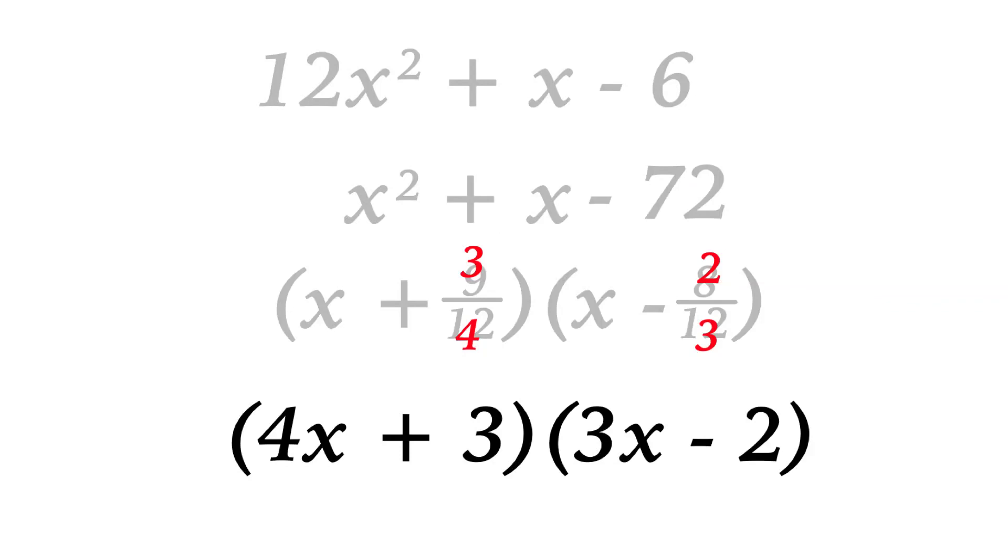In fact, all we have to do is take the denominators, let those be our leading coefficients for the two binomials, and then we continue to bring down the plus 3 and the minus 2. So that's how we can utilize a leading coefficient of 1 to solve more complex trinomials.